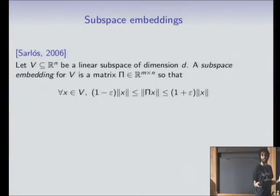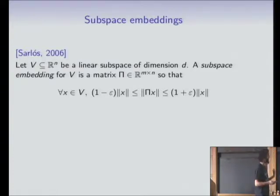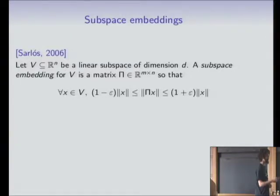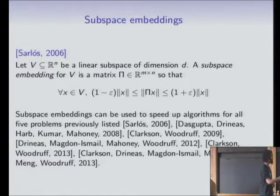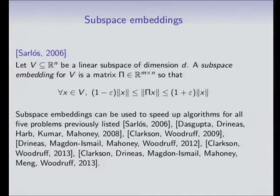M definitely cannot be less than D, because otherwise something in the subspace will be in the kernel of pi and I won't preserve its norm. I want M as close to D as possible. You can always get such a pi with M being D, but computationally we want to come up with pi quickly. It's known from lots of previous work that for all five problems listed, if you can get a good subspace embedding quickly, you can solve those problems more quickly.